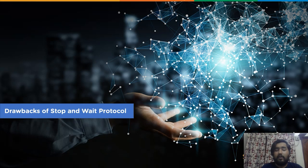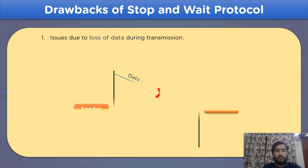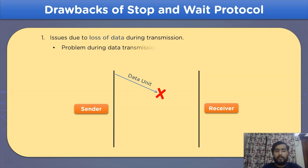The first drawback of using this protocol is the loss of data. This issue can arise when transmitting data from the sender side to the receiver end, due to a hacking attempt, network disruption, or any other network-related issue.